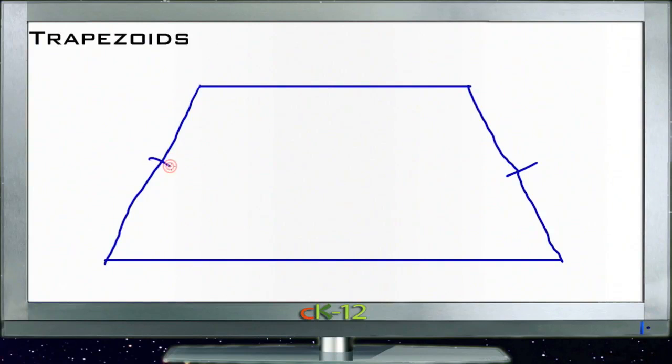We'll call these the same. Now, that means if this is an isosceles trapezoid, then these angles down here, the base angles, will be congruent.